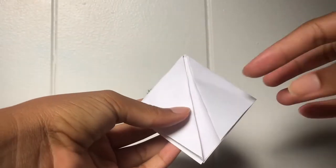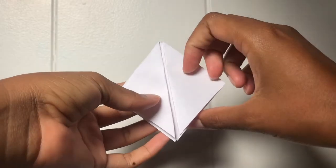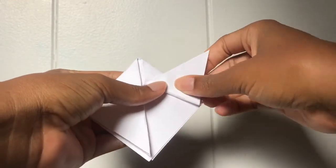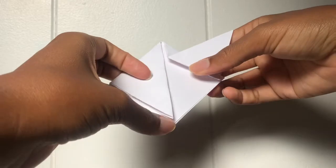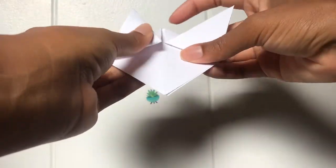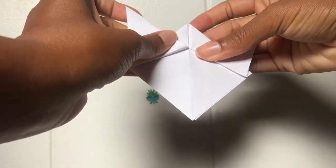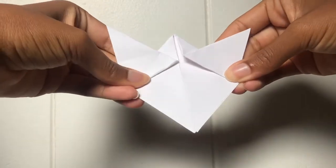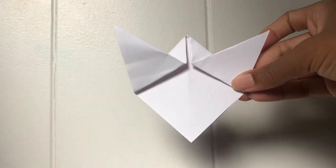Your next step is to fold one of the flaps up and then do the other side. So your origami should look like this so far.